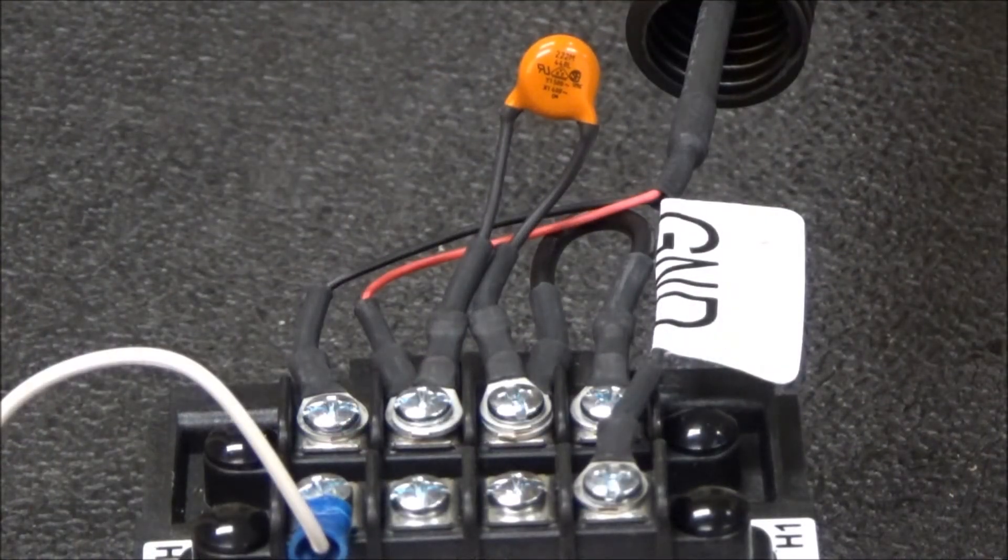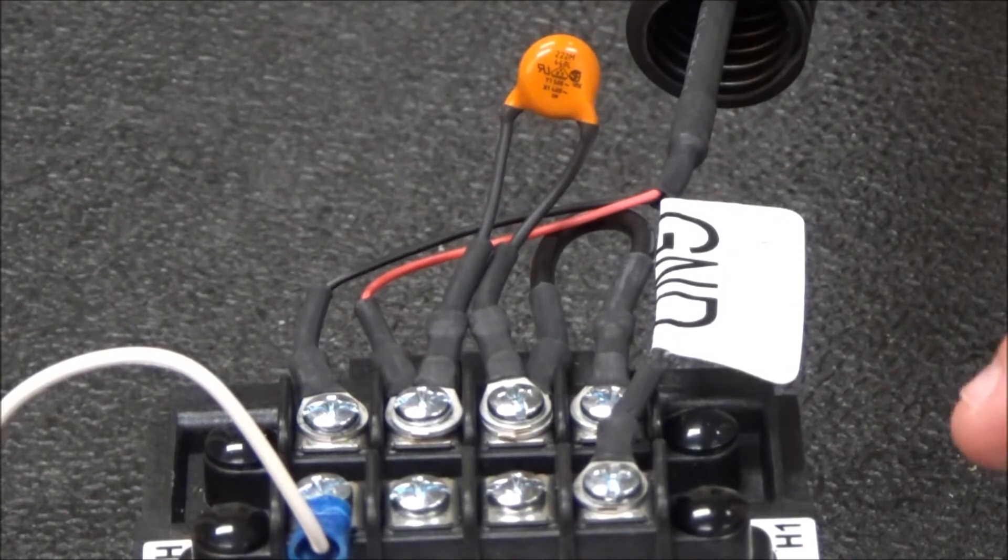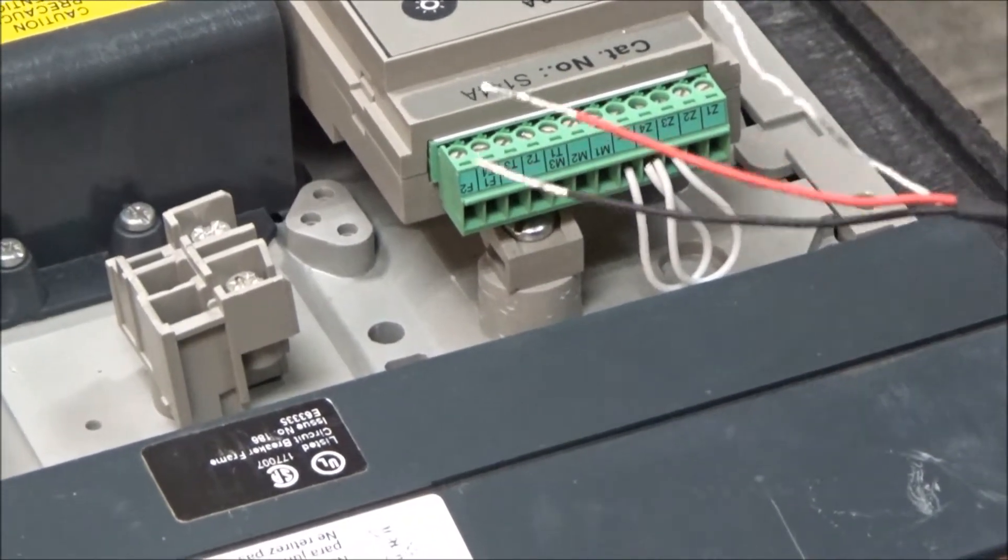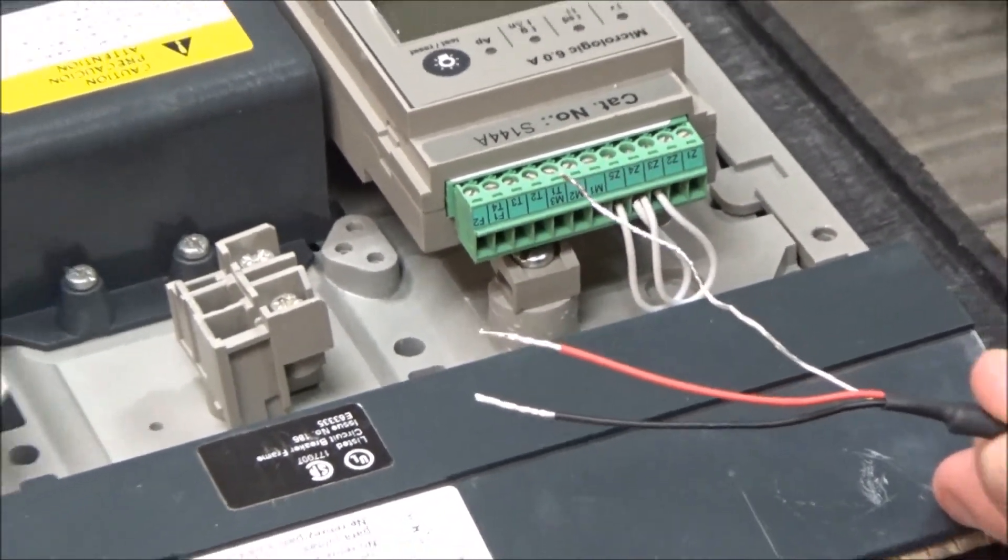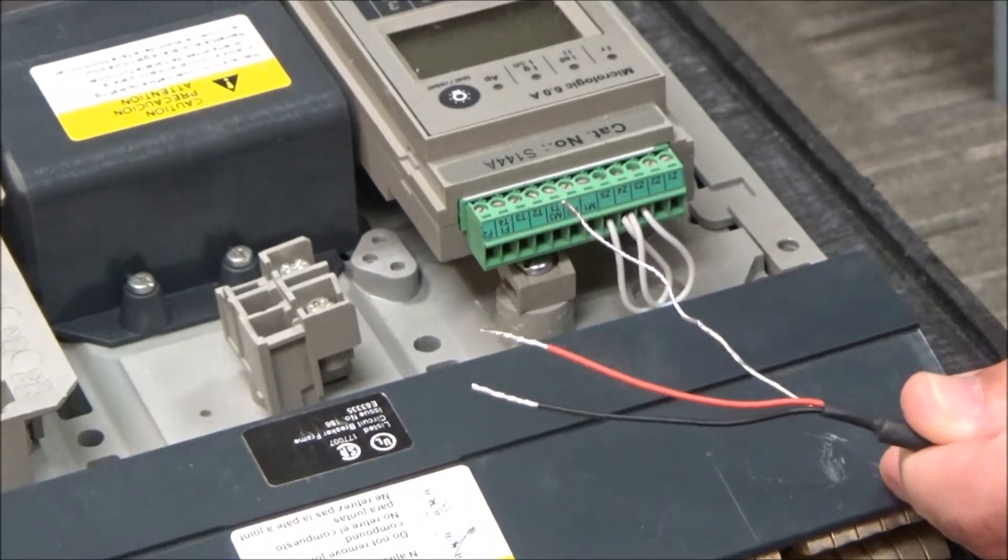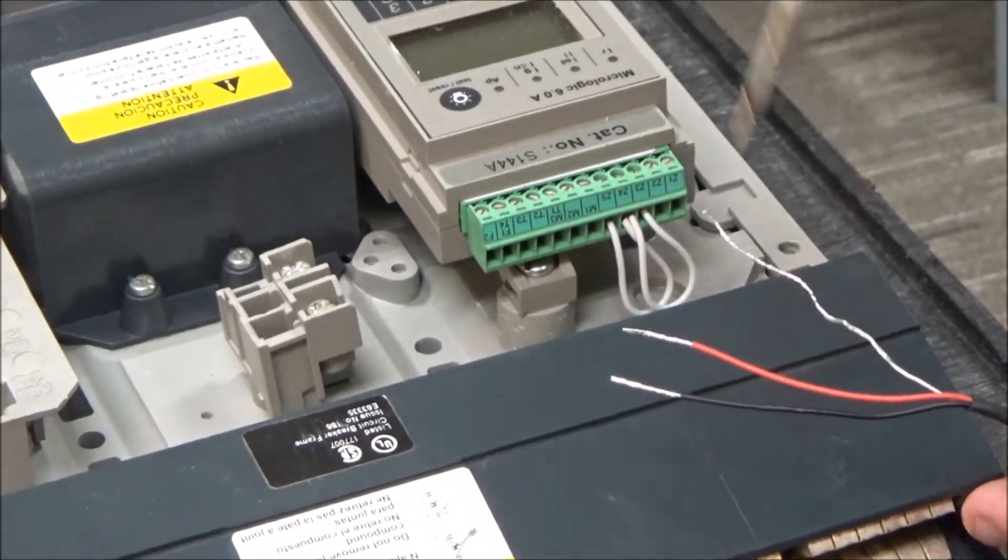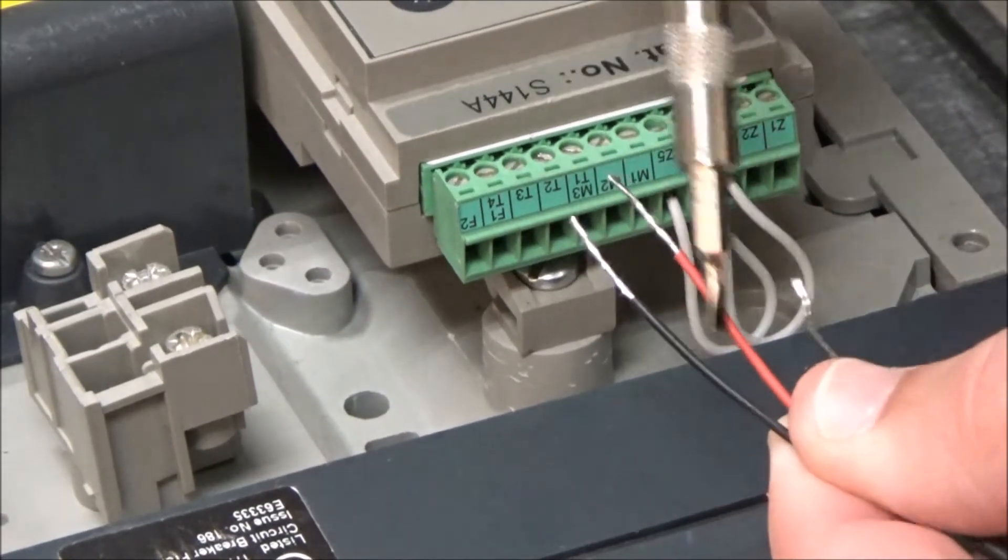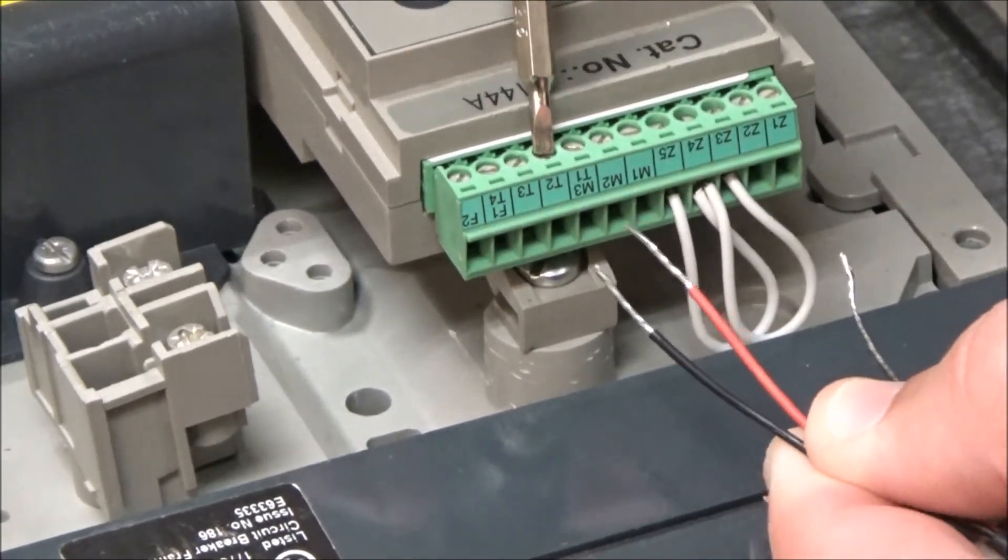Once you have all the necessary connections made on the Neutral CT, you will then attach the other side of the NCT wiring kit to the trip unit. The red wire will go on the T1 terminal, the black wire will go on the T2 terminal, and the bare wire to the T4 terminal.